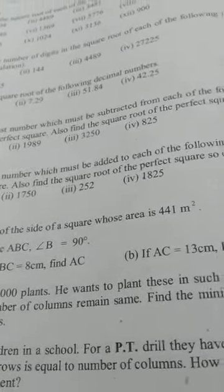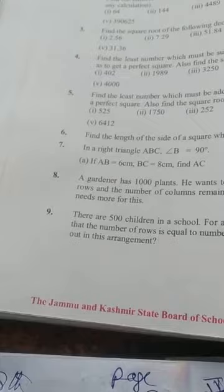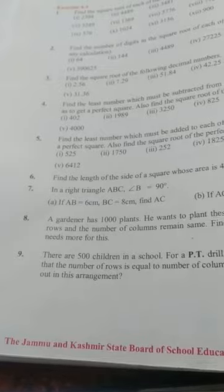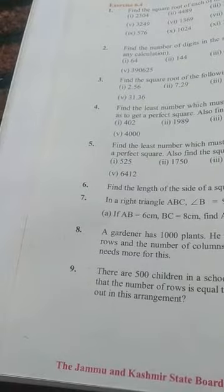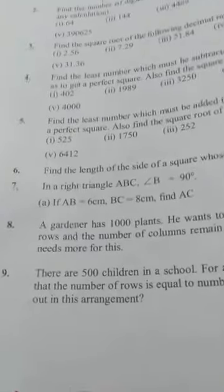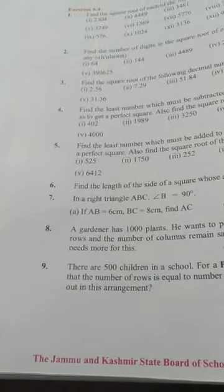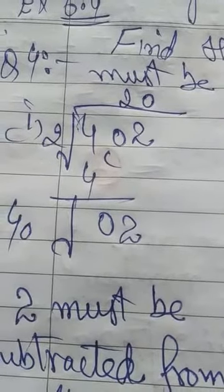Also find the square root of the perfect square so obtained. Turn to page 116 in your book, read question number 4 carefully. We need to find the perfect number, create the square root. Here we have 402. Let's see if 402 is a perfect square root. If not, we need to subtract something from it, then what remains will be the square root.